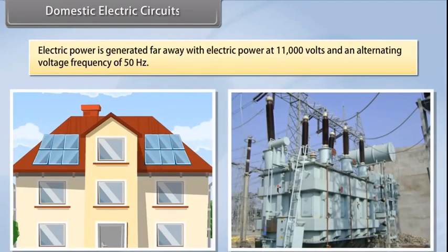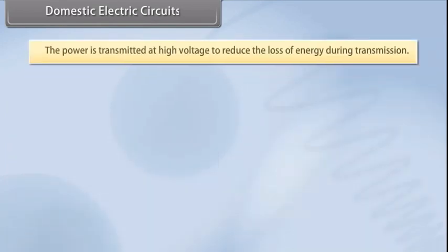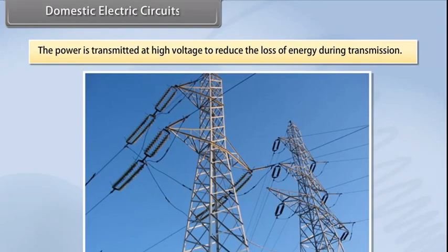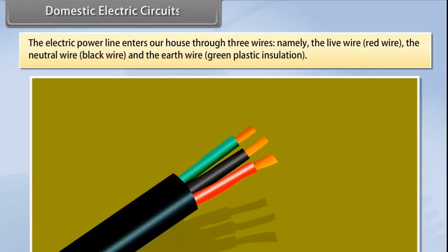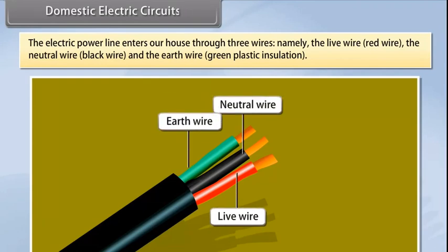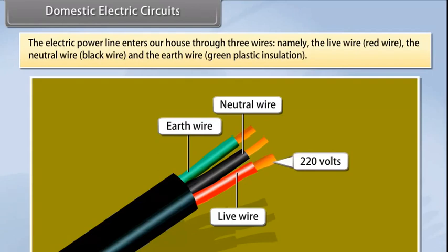Domestic electric circuits. Electric power is generated far away from the places it is consumed. At the generating station, the electric power is generated at 11,000 volts with an alternating voltage frequency of 50 hertz. The power is transmitted to the places of consumption at high voltage to reduce the loss of energy during transmission. The electric power line enters our house through three wires: the live wire (red wire), the neutral wire (black wire), and the earth wire (green plastic insulation). The live wire has a high potential of 220 volts, and the neutral wire has zero potential. Thus, the potential difference between the live wire and the neutral wire is 220 minus zero, which equals 220 volts.